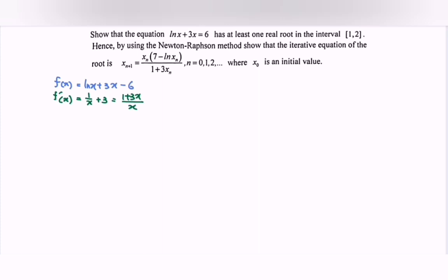Continue. We have to show the situation has at least one real root in the interval [1, 2]. So kindly substitute f(1). So if we substitute f(1), then we will have negative 3.